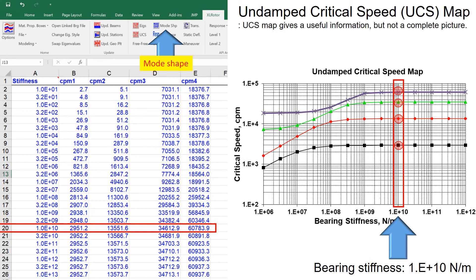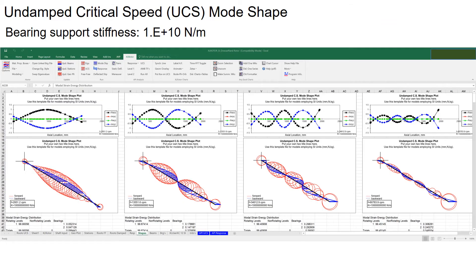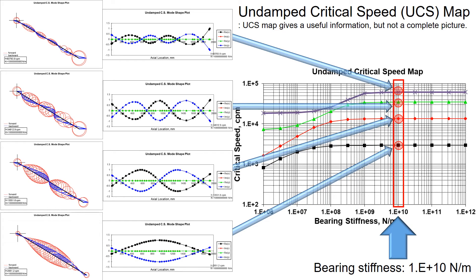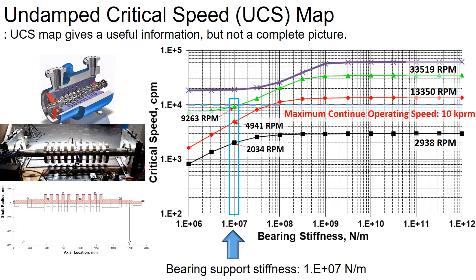Now let's look at the mode shapes for a higher bearing support stiffness of 10^10 Newton per meter. Here are the mode shapes for the rotor at this higher bearing support stiffness. As you can see, the rotor mode shape is no longer a rigid mode. For higher bearing support stiffness, the first critical speed mode shape is a bending mode, and there is restricted motion at the bearing support location.